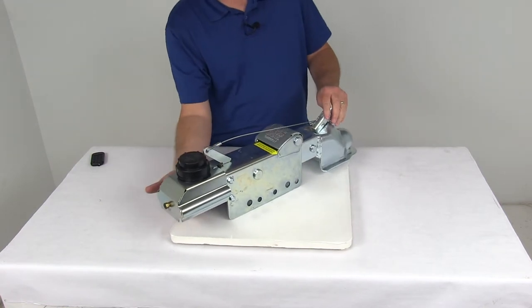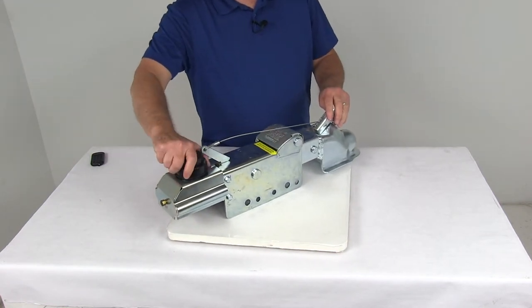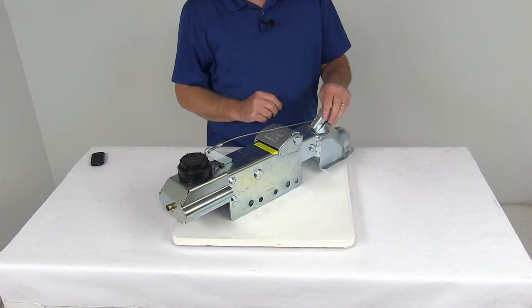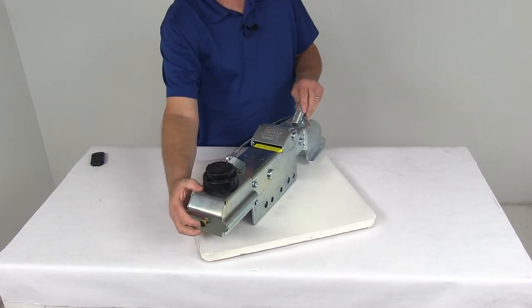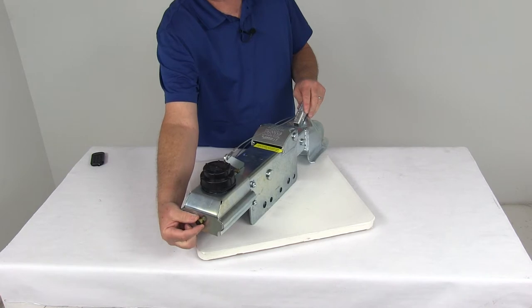Now on the rear here, the master cylinder is right underneath here. You can see it has the cap that you can unscrew to put brake fluid in the cylinder. The other thing I want to mention, on the very back here, here's your connection for your hydraulic brake lines.